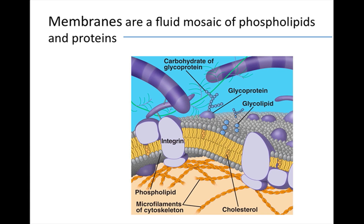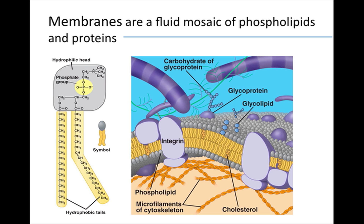Fluid mosaics are a mosaic in that they have diverse protein molecules embedded in a framework of phospholipids. The membrane is fluid in that most of these molecules can drift about in the membrane. Double bonds in the unsaturated fatty acid tails of many phospholipids produce kinks that prevent phospholipids from packing tightly together, keeping the membrane fluid.